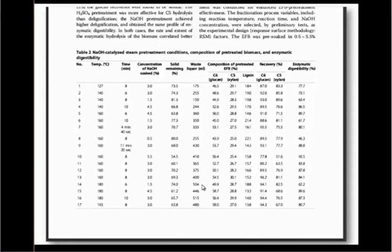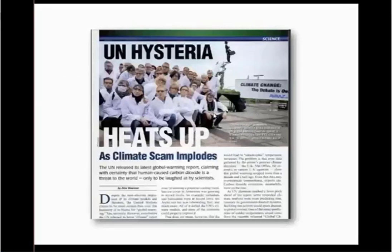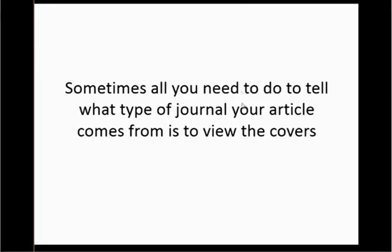Here is an example of a scholarly article on global warming. You can see there is a fairly large table that presents information referring directly to the tests the authors conducted. In contrast, a popular article on global warming will jazz up the display with lots of pictures and graphics to keep your interest. You can see the title is designed to grab your attention, there's no abstract, and the article opens with a nearly half-page picture. Sometimes viewing the journal itself is all you need to tell which type it is.